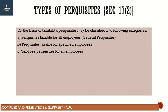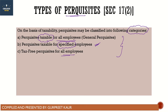The most important thing to keep in mind is which categories perquisites are divided into. There are three categories: first, perquisites that are taxable for all employees; second, perquisites that are taxable only for specified employees; and third, tax-free perquisites that are free for all employees.